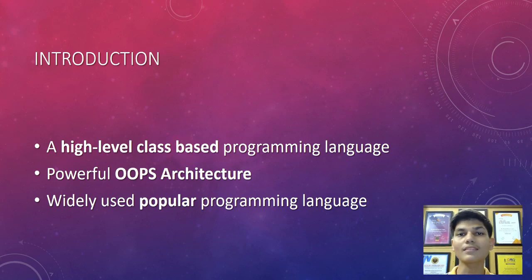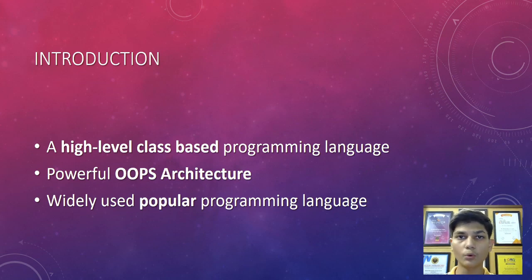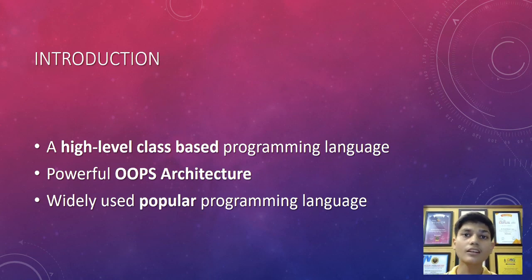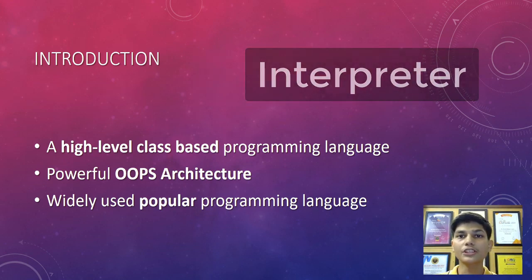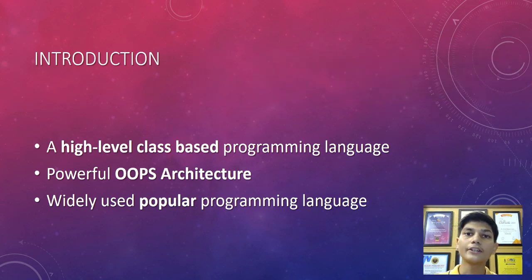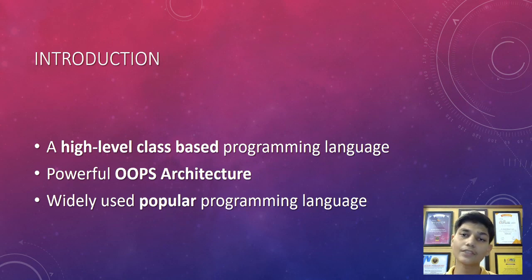Now what does high-level mean? High-level programming languages are those languages in which we can understand the code — what is written, we can understand. But it is not understandable by the computer. So to make the computer understand it and perform the specific tasks we have given, there is an interpreter in between which converts our code into binary code that is understandable by the computer, and that way it gives us the output.